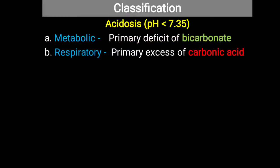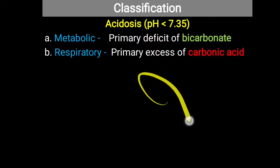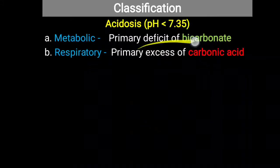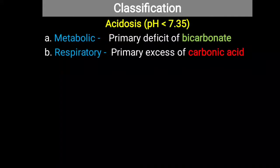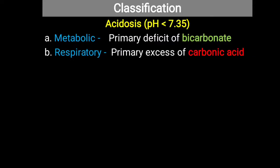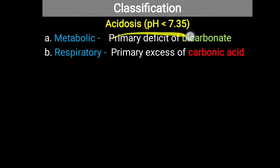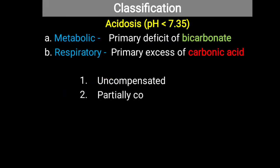In the bicarbonate buffer system, bicarbonate is the main base. When acid is added to the blood, this buffer's base — bicarbonate — is utilized, generating a bicarbonate deficiency. This deficiency is the predominant biochemical change in metabolic acidosis. Simply put, acid enters the blood, bicarbonate is used to buffer and maintain pH, but excessive utilization ultimately leads to metabolic acidosis. In clinical practice, it is categorized as uncompensated, partially compensated, or fully compensated.